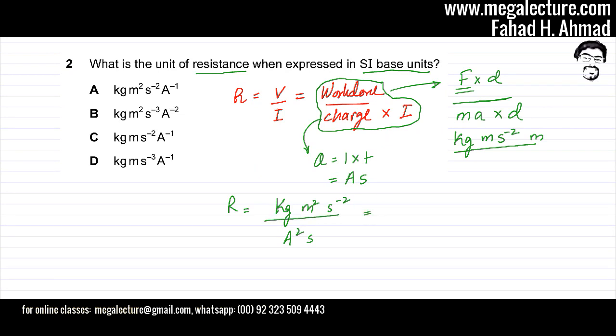Further simplifying this, it is going to give me kg m squared. This s minus 2 would become s minus 3 because if I bring this s on top, it's going to become s minus 1, so that would be s minus 3, and then ampere would be minus 2. This over here would be my final derived base unit for resistance.